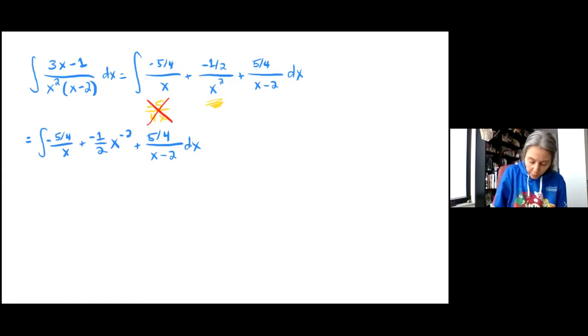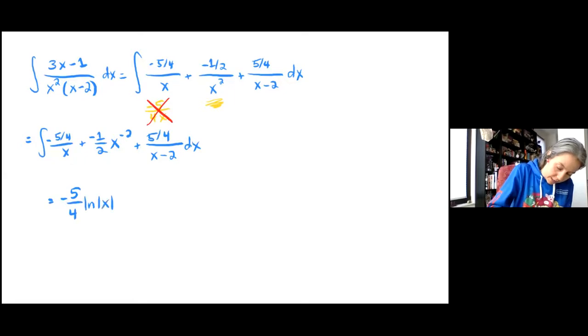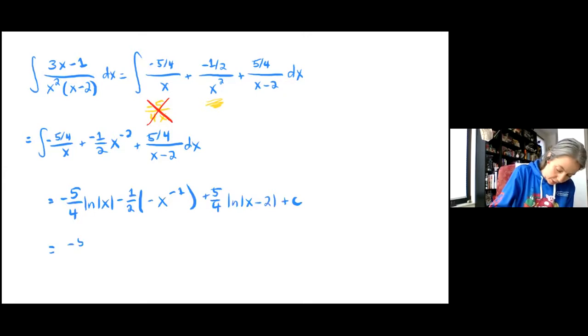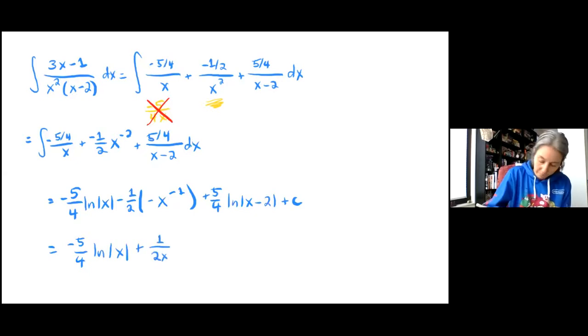Now all of these are known forms. So we can get that this is negative 5 over 4 natural log of x minus 1 half. But then we're going to have negative x to the negative 1 plus 5 over 4 ln of x minus 2 plus C, which I'll simplify to make just look just a little bit prettier. So we have plus 1 over 2x plus 5 over 4 ln of x minus 2 plus a constant.